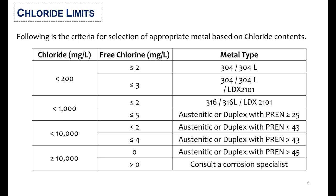For chloride limits less than 10,000 mg/L with free chlorine less than or equal to 2, austenitic or duplex grades with a Pitting Resistance Equivalent Number (PREN) less than or equal to 43 can be selected. For chloride contents greater than 10,000 with free chlorine equal to 0, austenitic or duplex with PREN greater than 45 can be selected. For higher free chlorine limits, a corrosion specialist should be consulted for selection of the right SS grade.